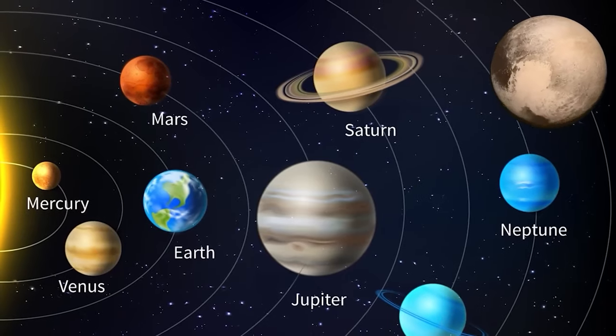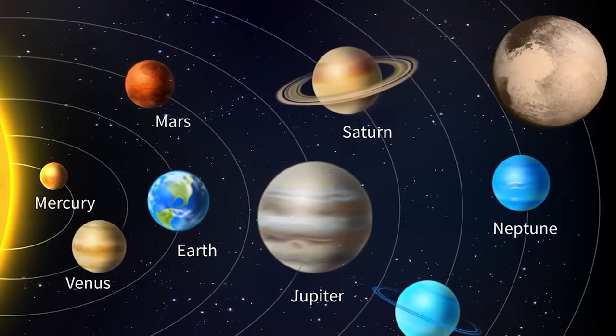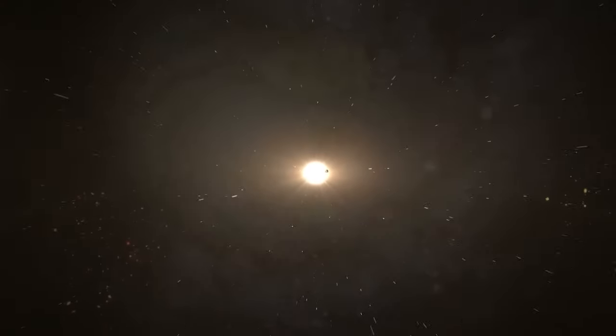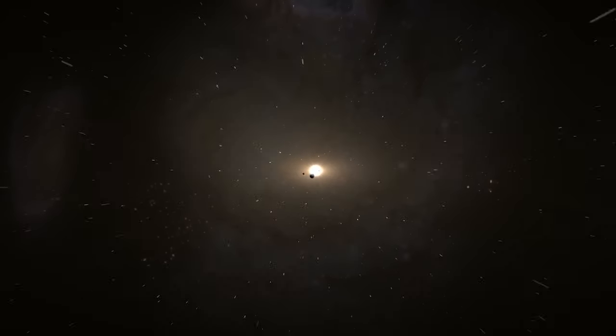This distant celestial body traverses an elongated path around the solar system's center, completing its orbit once every 248 Earth years.